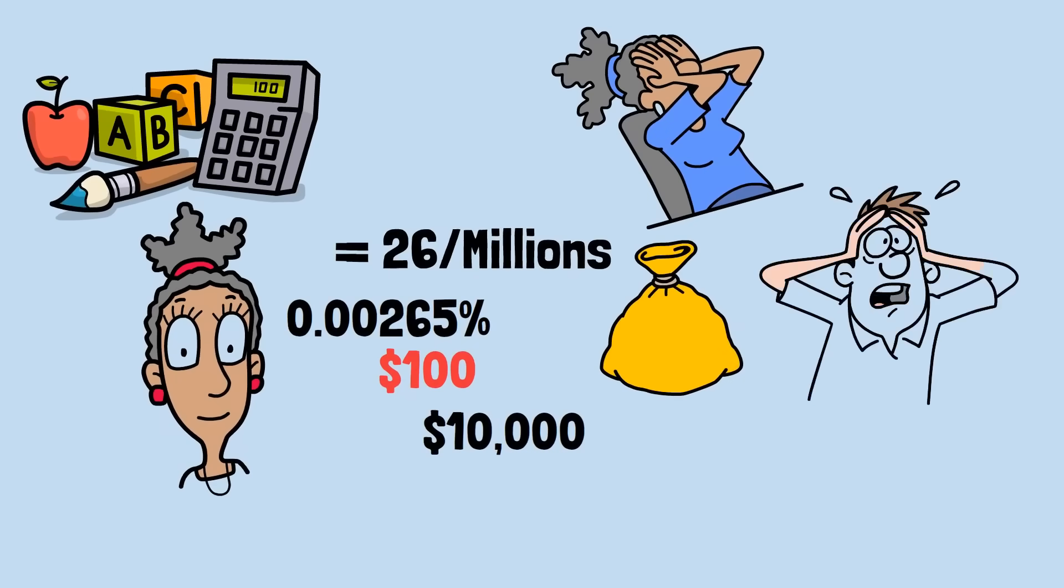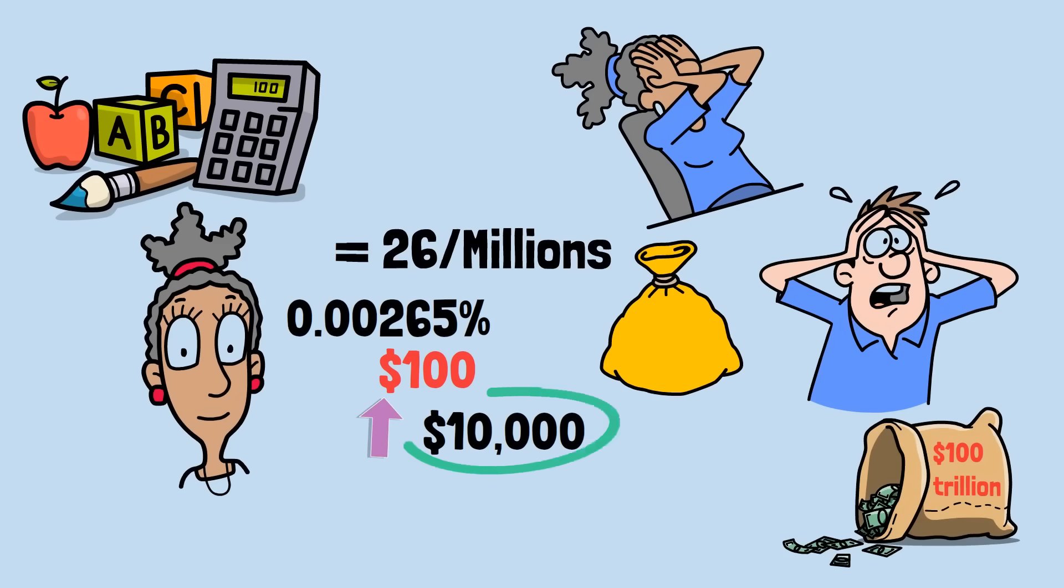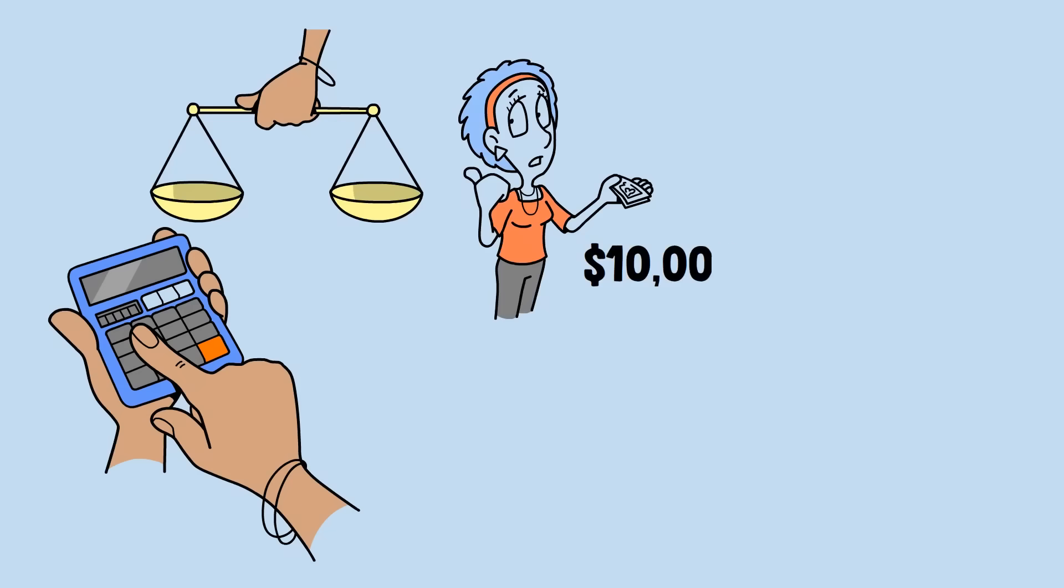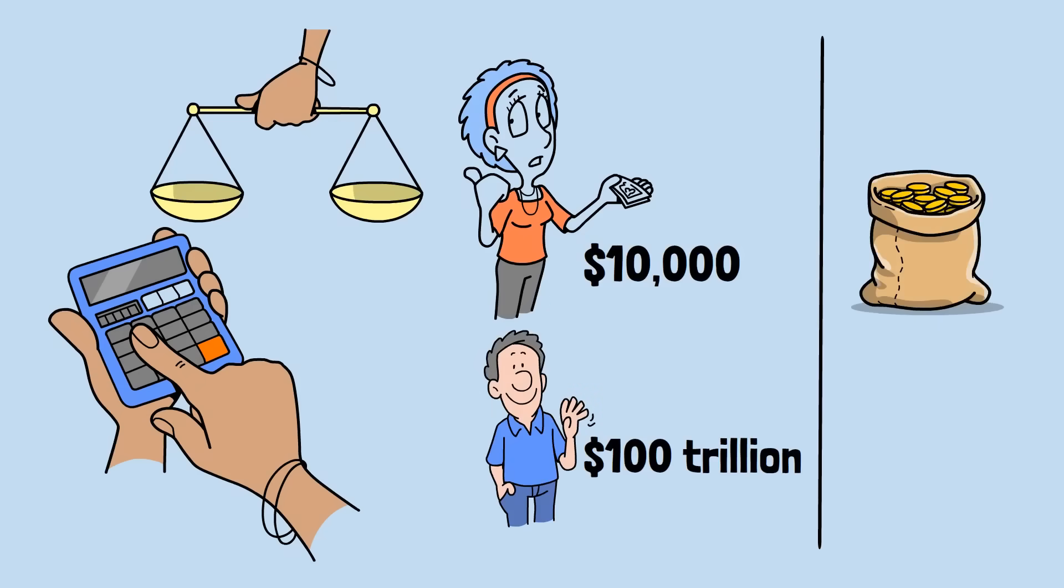But the real shock comes with Carlos. Despite his $100 trillion bankroll, literally a million times larger than Alice's, his probability of success is essentially identical: 0.00265%. The difference between their odds is so minuscule that you need a high-precision calculator just to detect it. For all practical purposes, the person with $10,000 and the person with $100 trillion have exactly the same chance of winning $100 using this strategy.